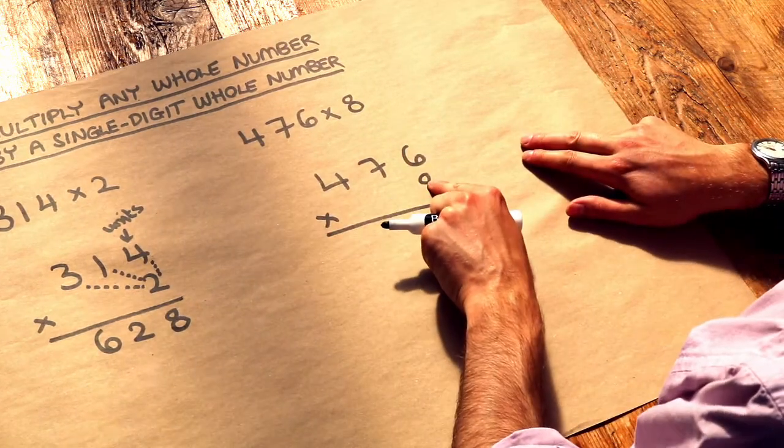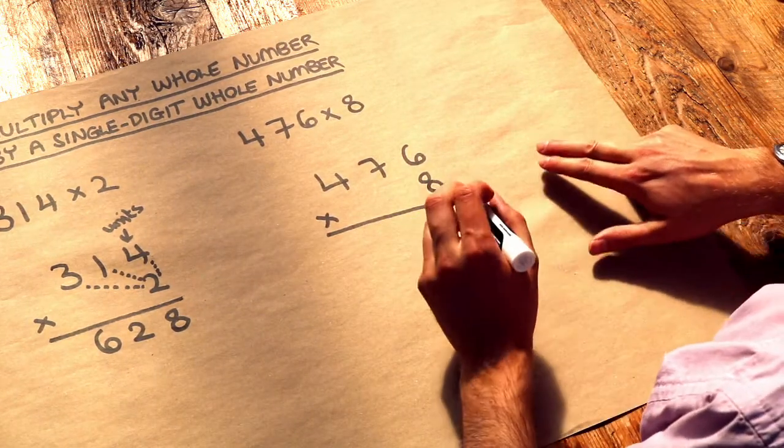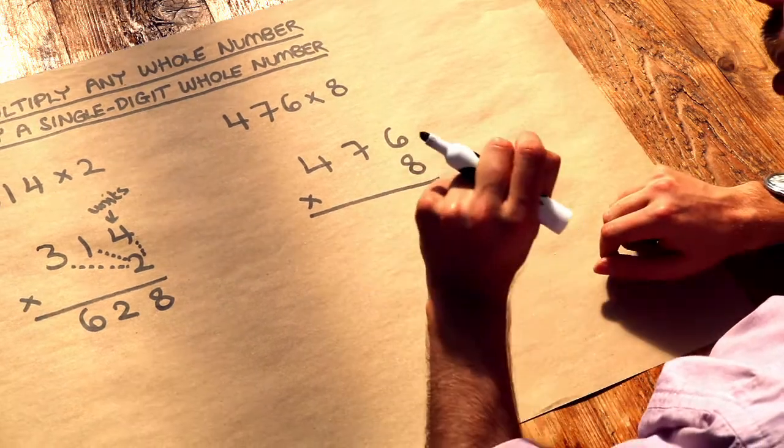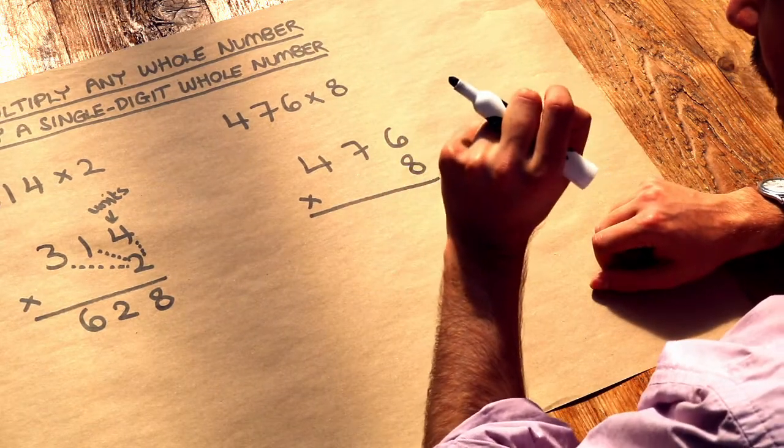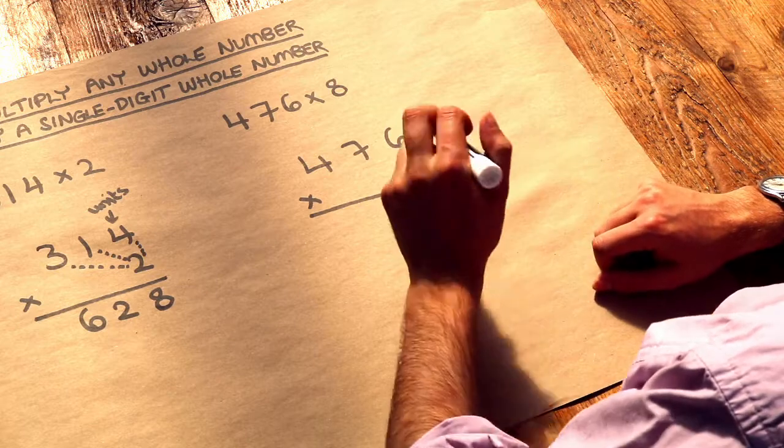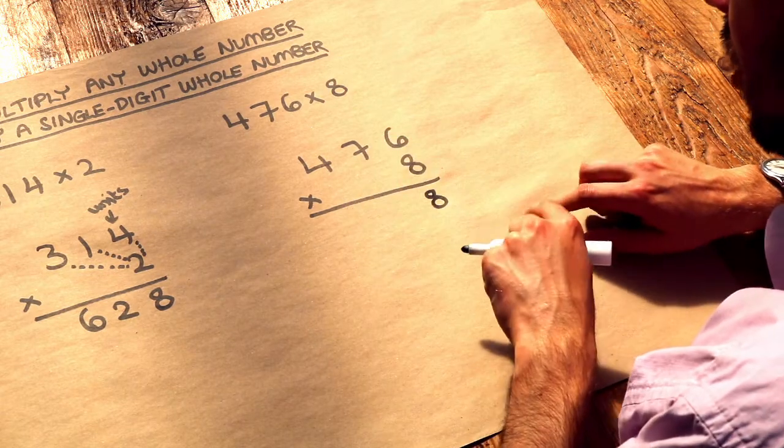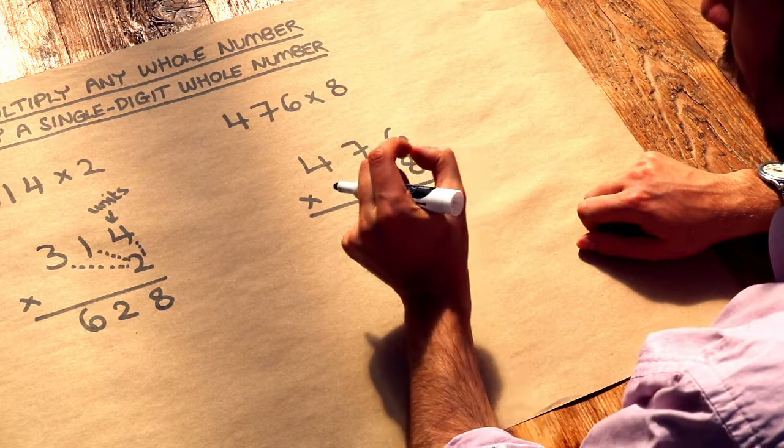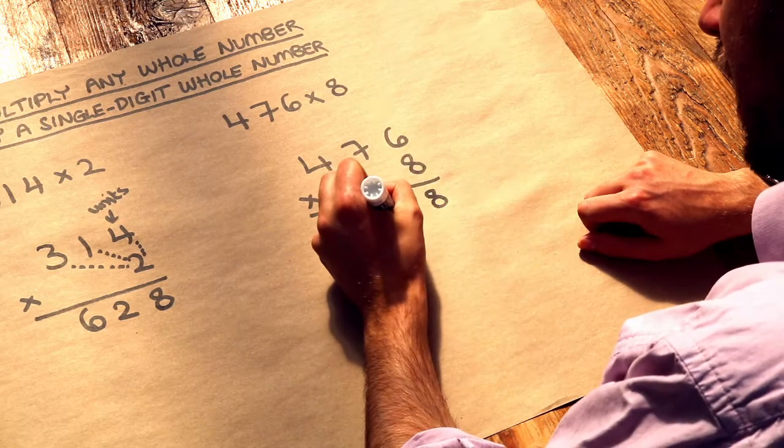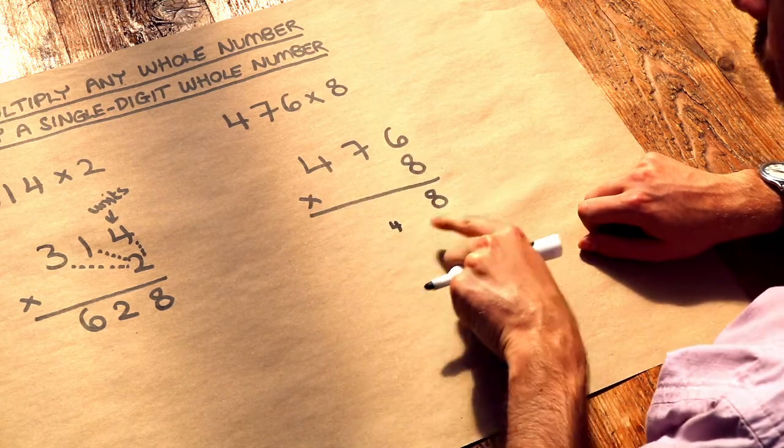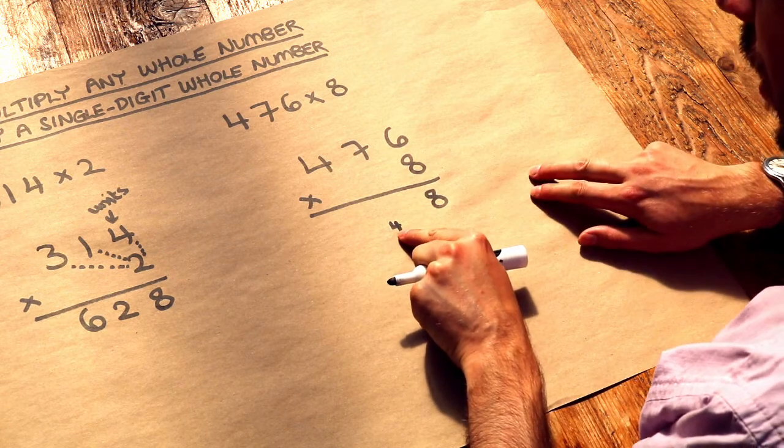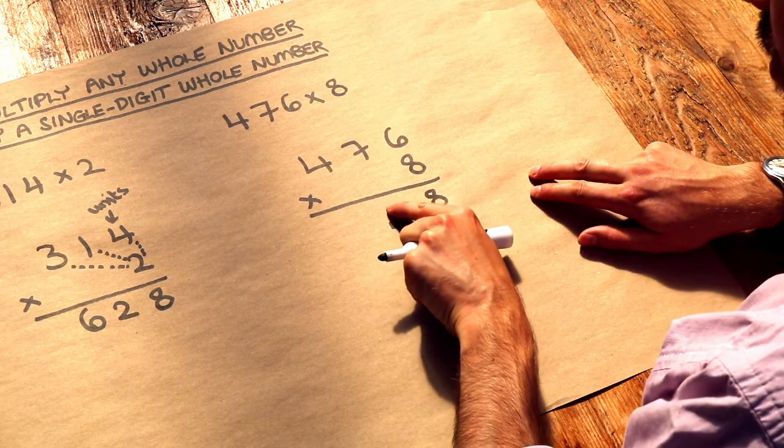So we first do 6 times 8, that's 48, and what you do is you put the units digit of whatever number you get, so 48 the units digit is 8, and then what I do is that 4 in front of the 8, I put that as what's known as a carry so I'm going to make that a very small number underneath where I'm going to put the next number in my result.